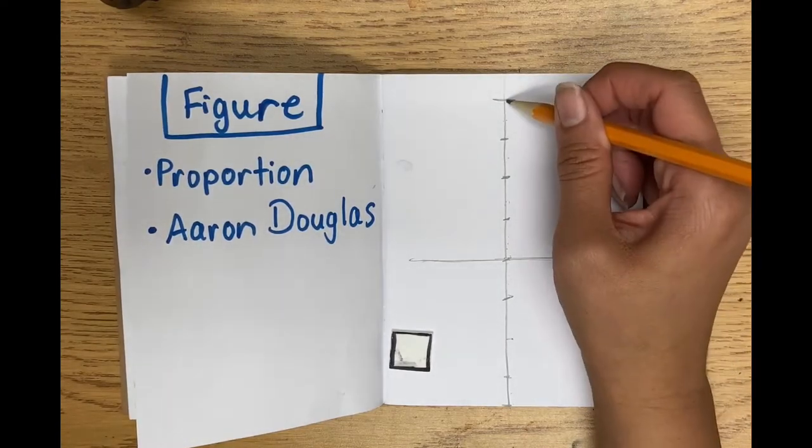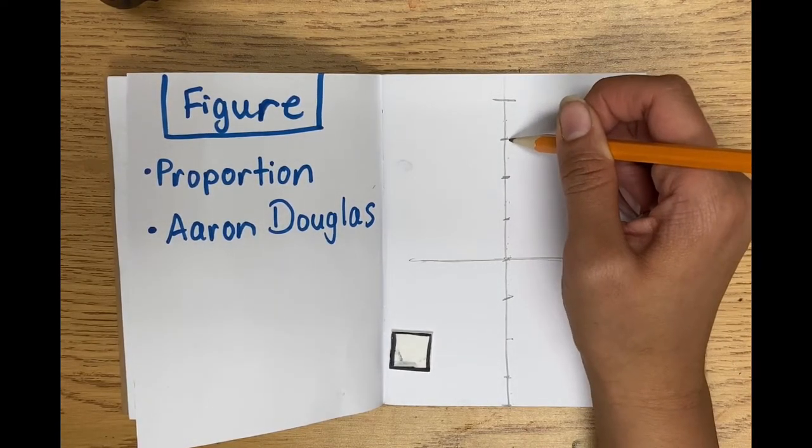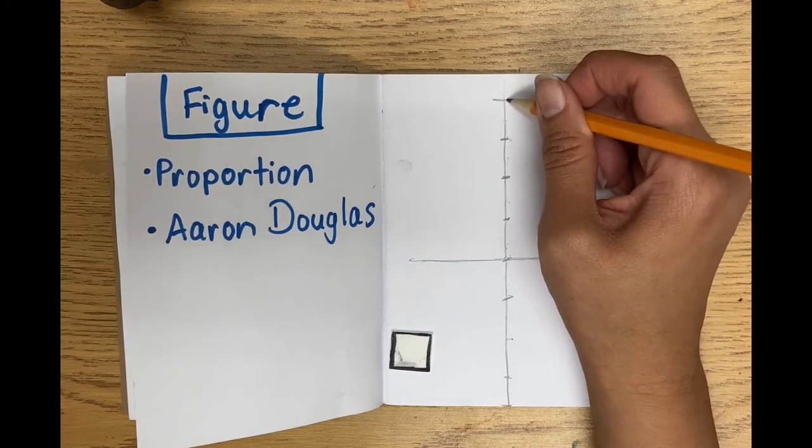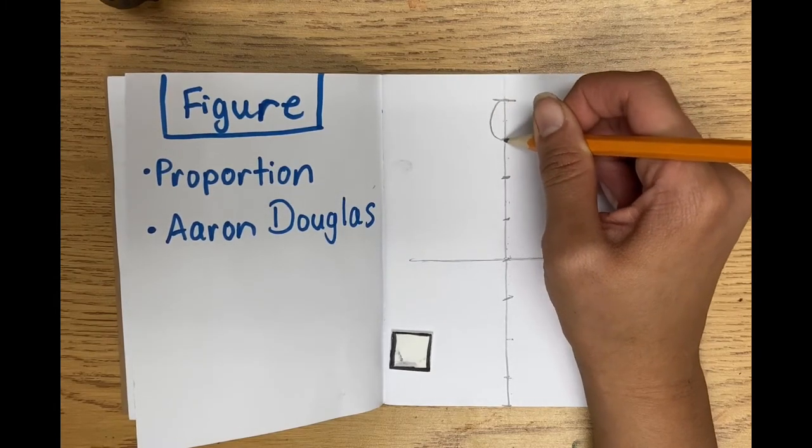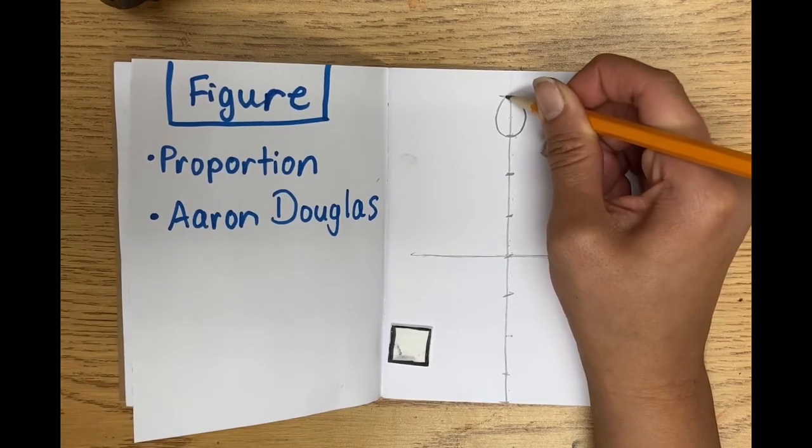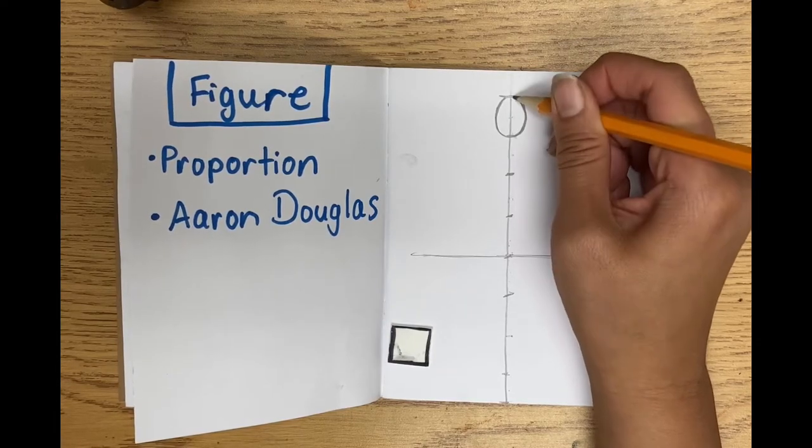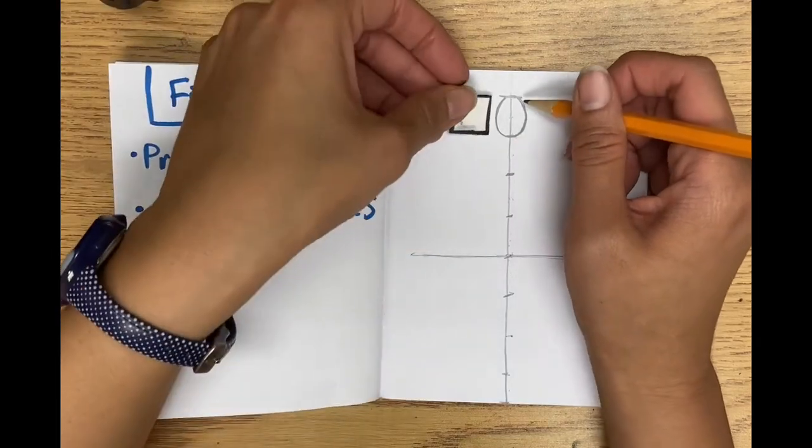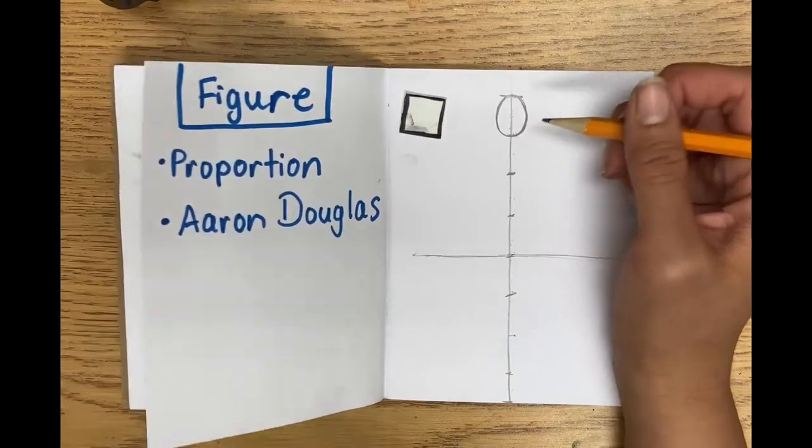In between the top and the first line you drew, I want you to make an oval. That's going to be our head. So in between the first line, this should be the measurement of one head.